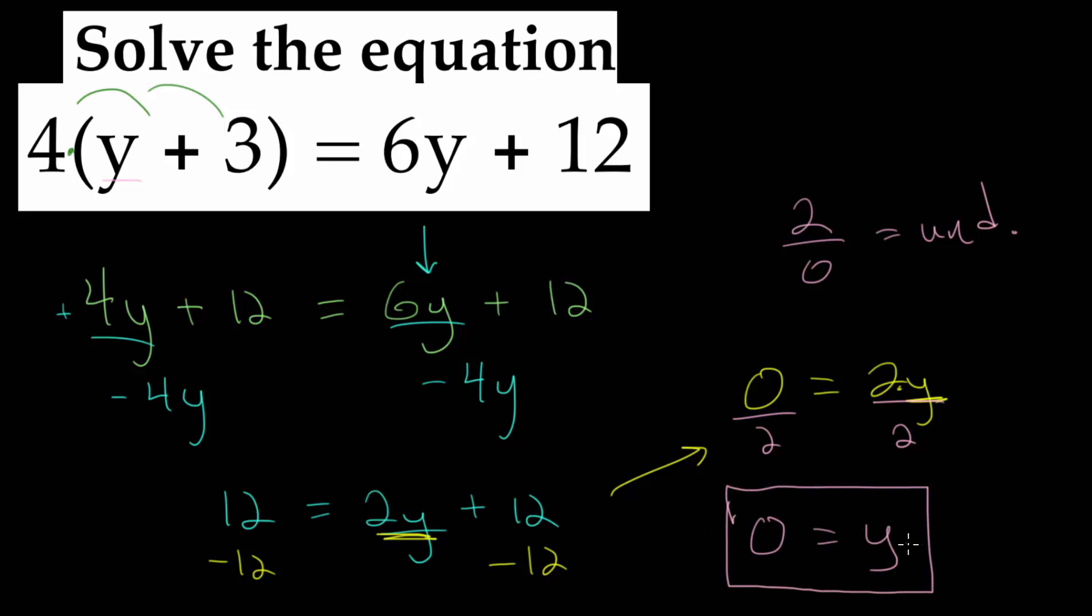But this is just what we think is the answer. To be completely confident, we need to check this. Let's check our answer by plugging in y equals 0 into our equation anywhere we see a y. We have 4 multiplied by 0 plus 3. This is equal to 6 multiplied by 0 plus 12. It is a good habit when substituting something in for a variable to place that in parentheses.